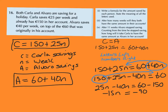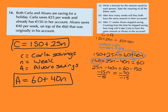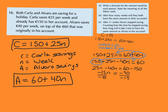Divide by minus 15. Make sure that you're dividing by the number that's in front of the n — in this case it's minus 15. When I do that, I get n on this side because minus 15 divided by minus 15 is 1, and then minus 90 divided by minus 15 gives me 6.